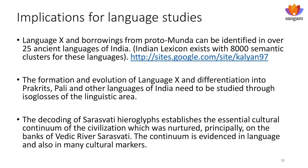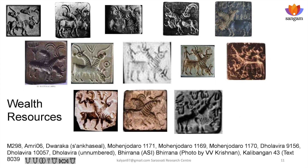The decoding of the Saraswati hieroglyphs establishes firmly the essential cultural continuum of the civilization, which was nurtured principally on the banks of the Vedic River Saraswati, accounting for 80% of the civilizational sites — more than 2,000. The continuum is evidenced in language and in many cultural markers. Look at this cultural marker seen in about 10 or 11 seals showing the combination of animals — combined animal architecture. Biridana has shown a continuity of civilization from the 7th millennium BC, with continuous settlements from circular living places to rectangular square buildings.